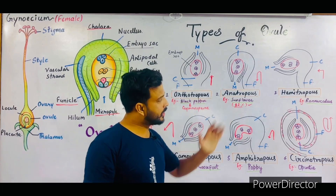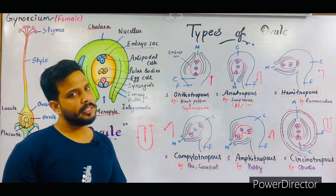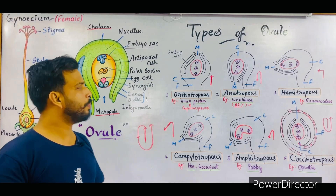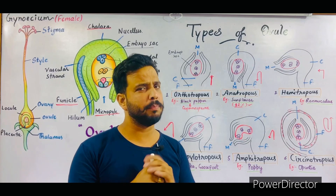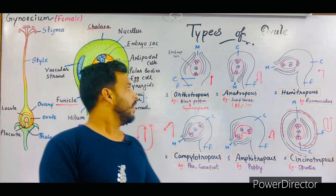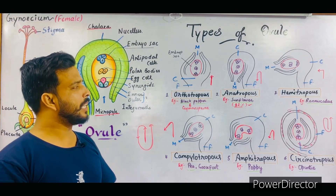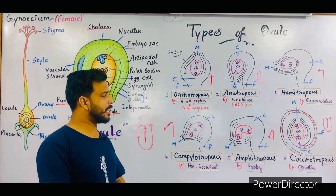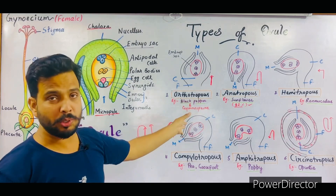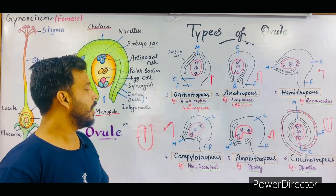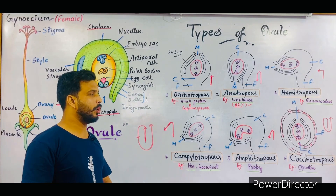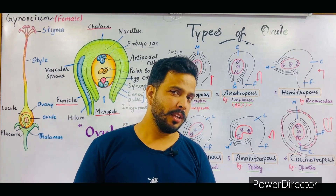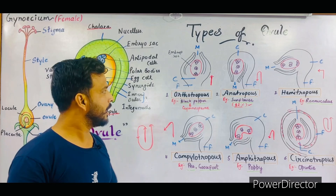Let's revise all six types of ovule. Orthotropous — example: black pepper and all gymnosperms. Anatropous — example: sunflower and other members of family Compositae or Asteraceae. Hemitropous — example: Ranunculus. Campylotropous — example: pea and goosefoot. Amphitropous — embryo sac is horseshoe-shaped, example: poppy. Circinotropous — a very interesting and different kind of ovule, example: Opuntia.